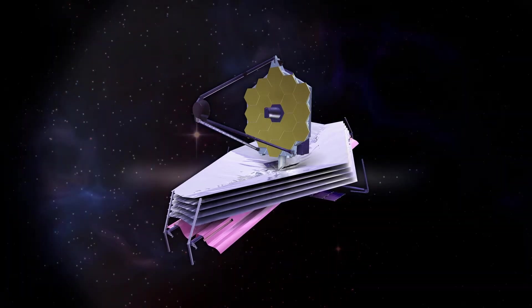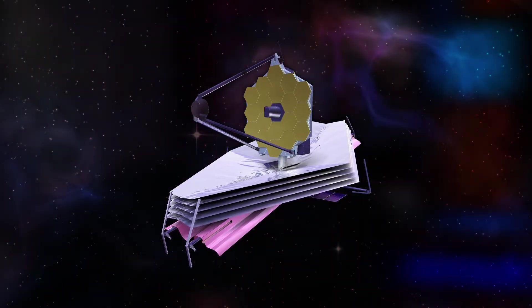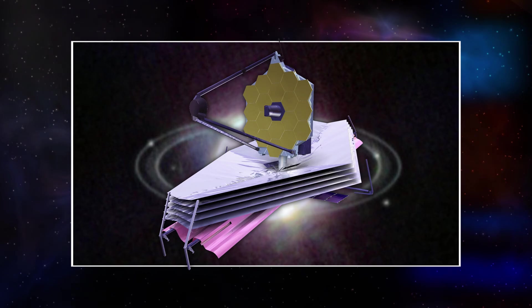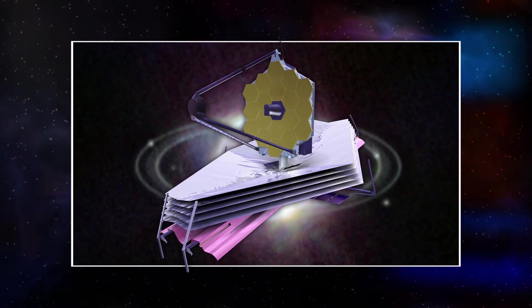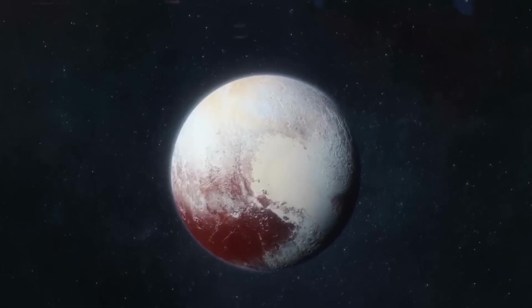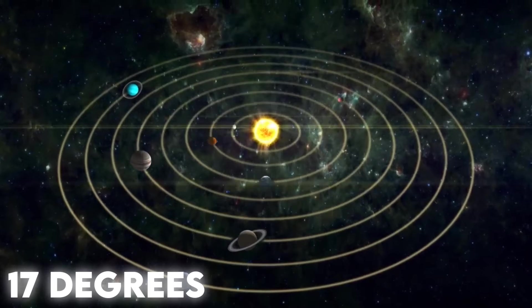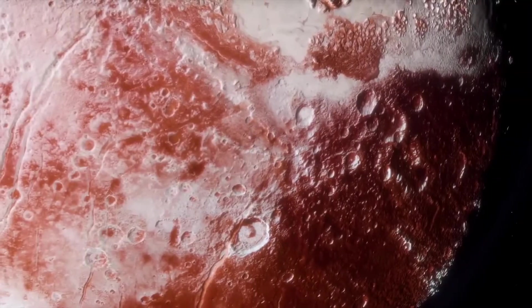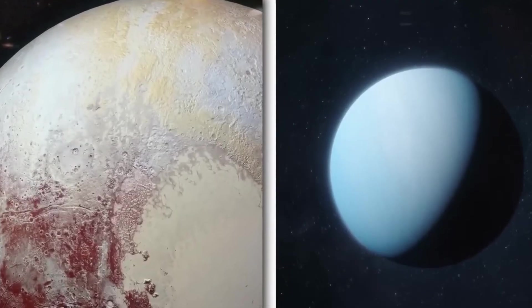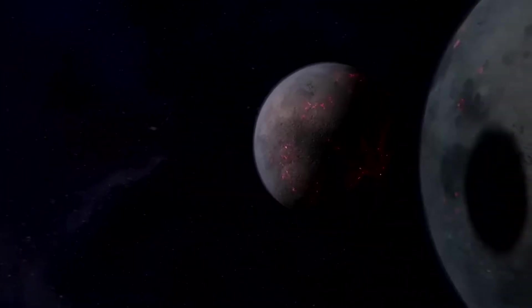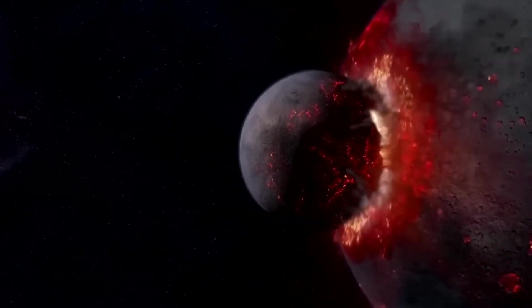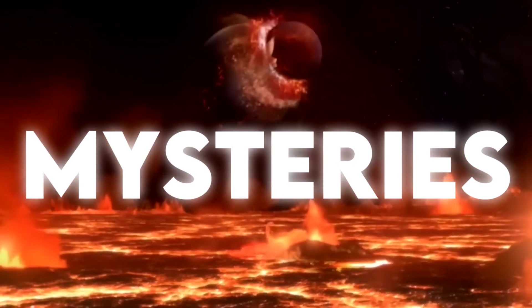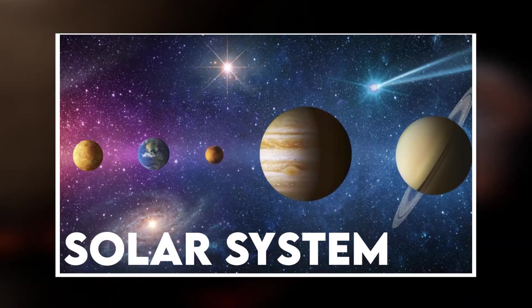The James Webb Space Telescope recently captured an unexpected event: Pluto, the dwarf planet, with Neptune. Pluto's peculiar orbit, inclined at 17 degrees and intersecting with Neptune's path, brought the two celestial bodies together. This rare spectacle provides astronomers with a unique opportunity to unravel the mysteries surrounding these distant members of our solar system.